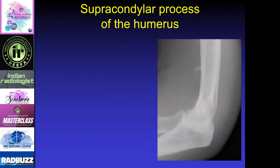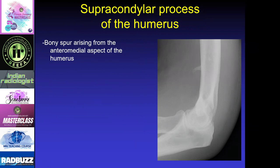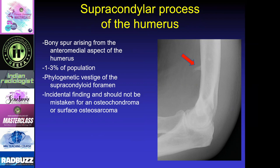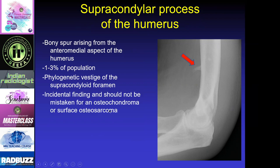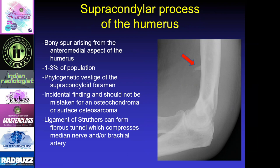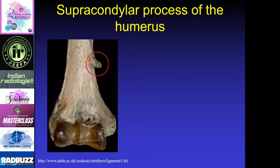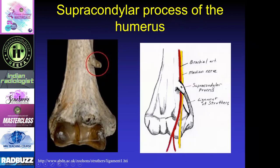Another lesion that could be confused for a tumor is the supracondylar process of the humerus — a bony spur that arises from the anterior medial aspect of the humerus. It's seen in about one to three percent of the population and is a congenital variant. You can mistake this for an osteosarcoma or osteochondroma arising from the humerus. One key feature is the ligament of Struthers, which arises from this lesion and attaches to the medial aspect of the humerus, forming a tunnel that can compress the brachial artery and the median nerve.